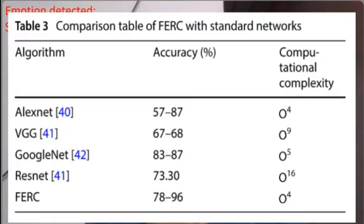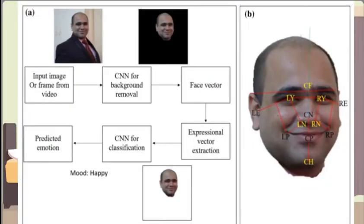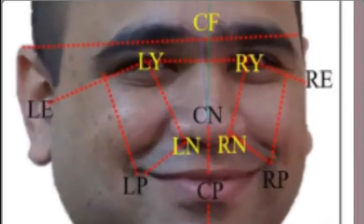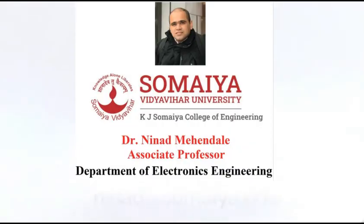It is a project developed by Dr. Ninad Mahendali. The first neural network removes the background, and the second neural network uses a 24-digit emotion vector to determine the emotion. The feature vector is formed using Euclidean distance between eyes, nose, ears, etc. For further details, contact Dr. Ninad.